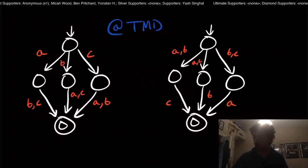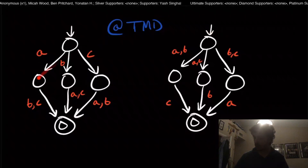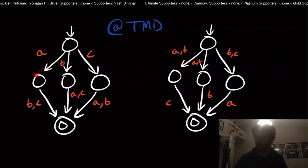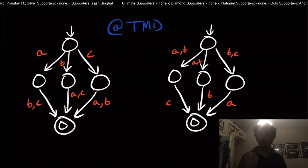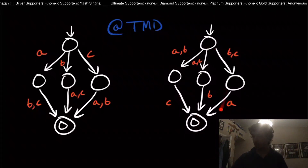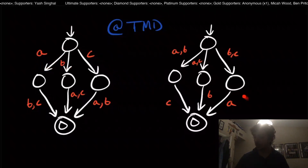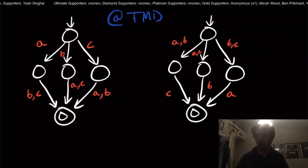I have two NFAs right here and they have exactly the same language. Here's the start state of both — the structures are identical except the transitions at the beginning and end are different. The language is all strings of length two that are not 'aa', 'bb', or 'cc'. So 'ab', 'ac', 'ba', 'bc', 'ca', 'cb' are in the language, but not 'aa', 'bb', or 'cc'. The only difference between the two NFAs is that one transition is up here versus down here on the other side.